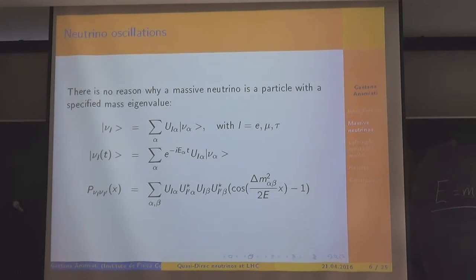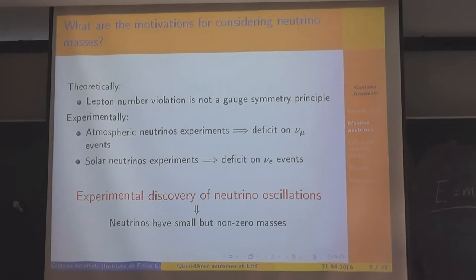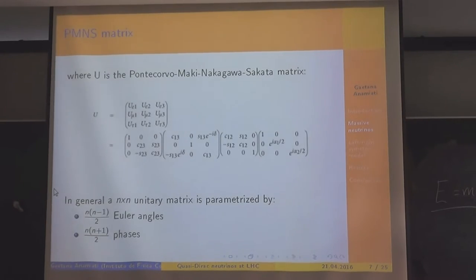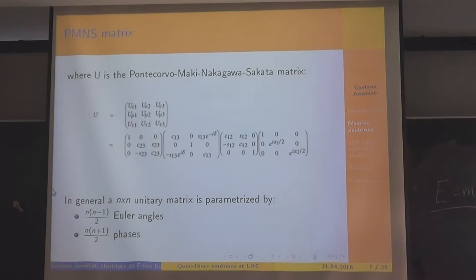If the mass difference is zero, the oscillation probability is zero. Of course, if neutrinos are massless the probability is zero. But we have experimental discovery of neutrino oscillation. The mixing matrix U is a unitary matrix parameterized with three angles — C and S are respectively cosine and sine — and only three physical phases, because thanks to a redefinition of the fields you can remove three of the six phases.